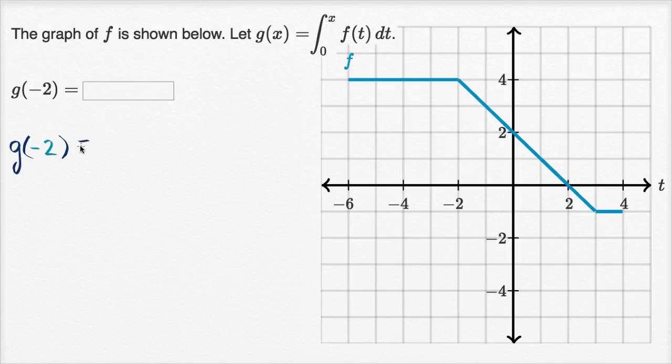So this is going to be equal to the integral from zero to x of, and I'll write x in a second, f of t dt. Well, x is now negative two. This is now negative two. And so how do we figure out what this is?